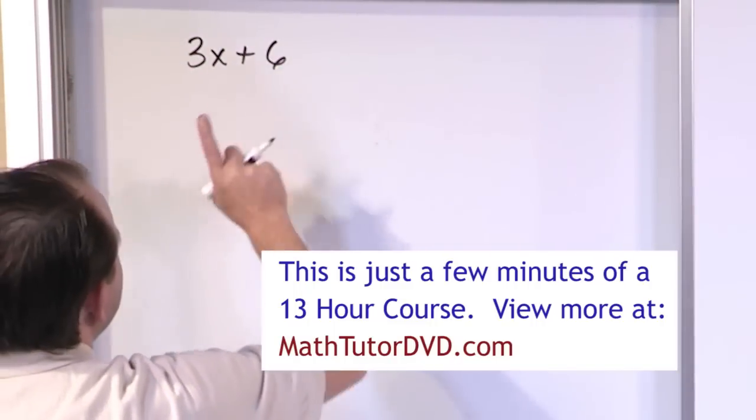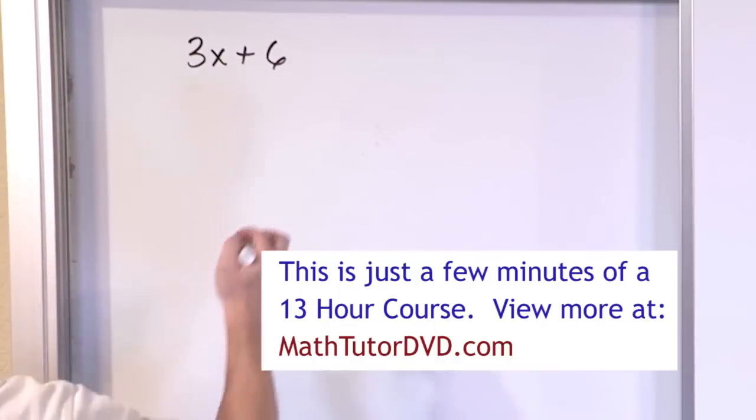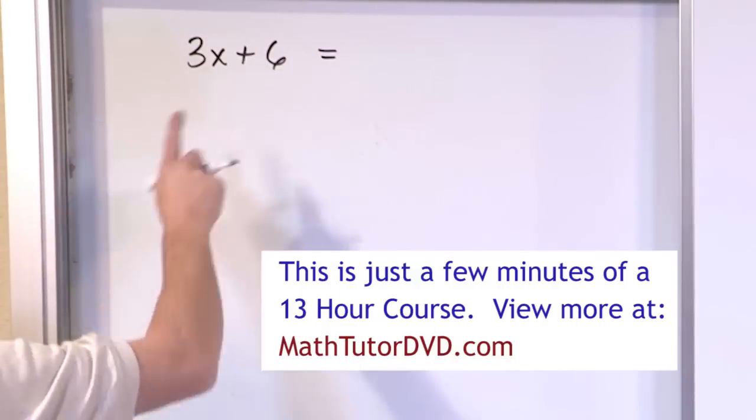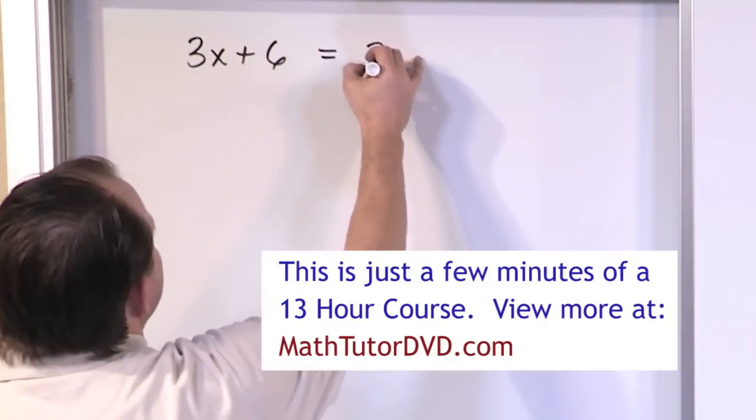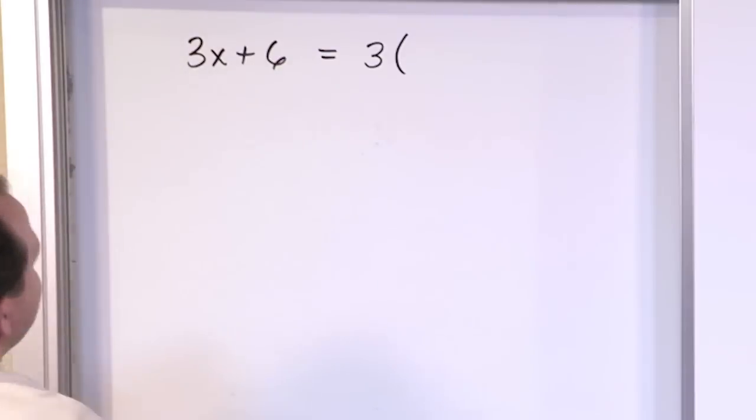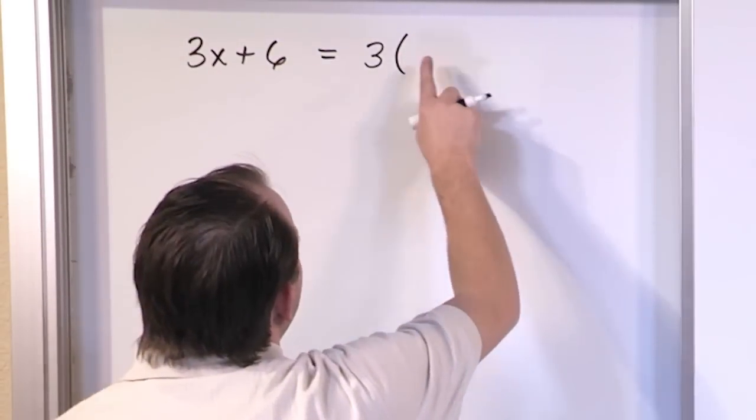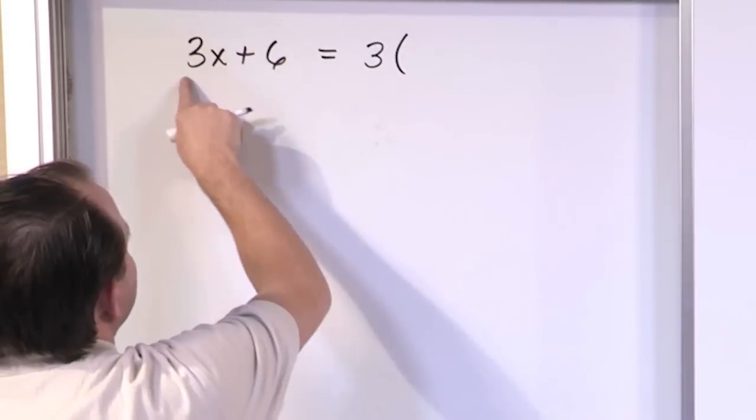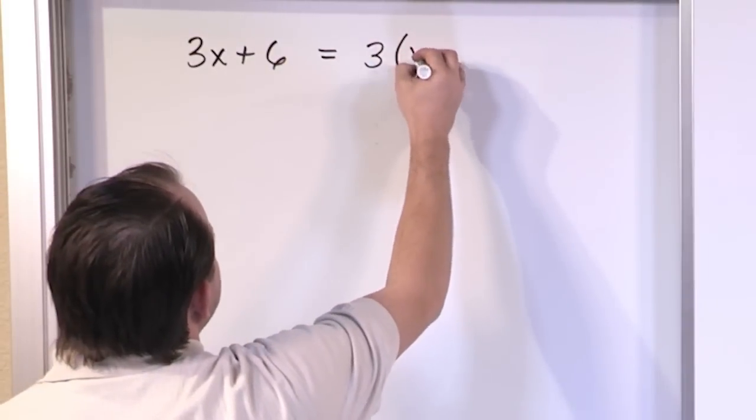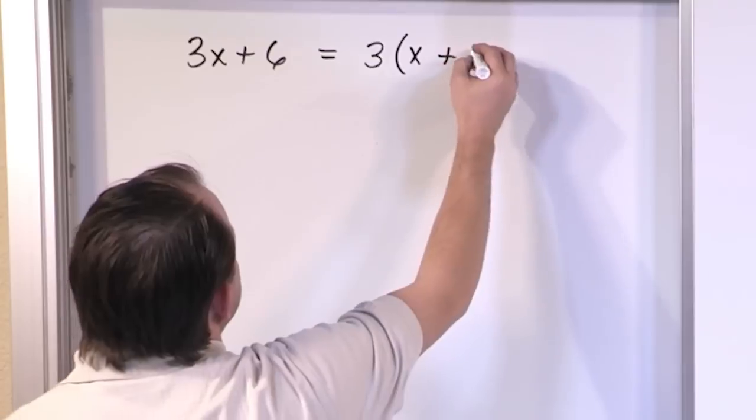6 is really 3 times 2. So in fact, even though it doesn't look like there's anything common, I actually can pull a 3 out of this expression. So you open up a parenthesis, and you have to write down in the middle what would be left over to make it equal to what you started with. You'd have to have x plus 2.